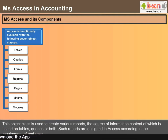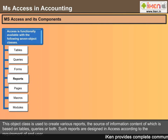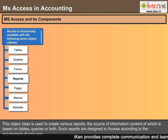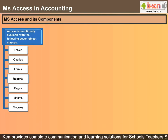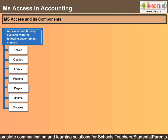Reports: This object class is used to create various reports, the source of information content of which is based on tables, queries, or both. Such reports are designed in Access according to the requirements of the end user.